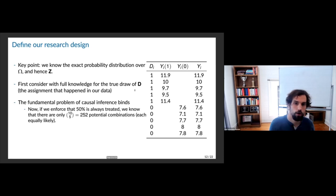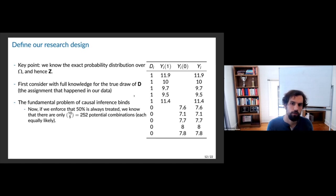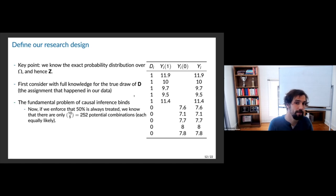This is the assignment we see in our data, but remember we don't actually see Y_i0 for the treated — we only see the data we observe; the fundamental problem of causal inference binds. If we enforce 50% treated via the urn draw, we know there were 252 other potential combinations that could have happened, and this was one of them — each equally likely.